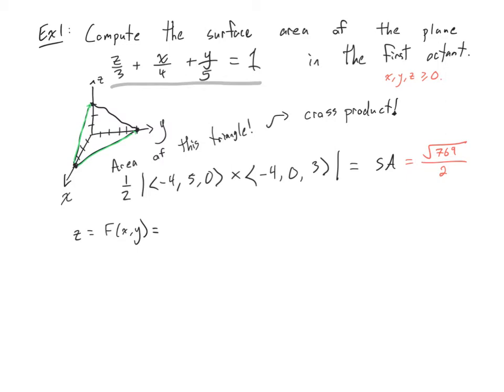I think that I should get 1 minus a bunch of things and then times 3. So 3 times (1 - x/4 - y/5) is equal to z. So this right here is my function, 3 times (1 - x/4 - y/5).